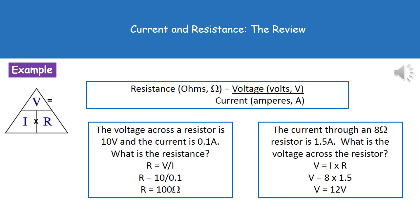To give you an example of how to use this then. The voltage across a resistor is 10 volts and the current is 0.1 amps. What is the resistance? So resistance is voltage divided by current. So resistance is going to be 10 divided by 0.1 which gives us our answer of 100 ohms.